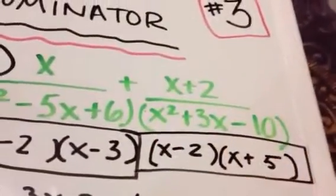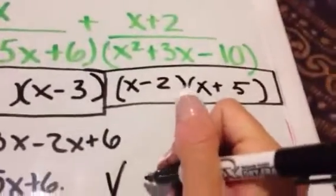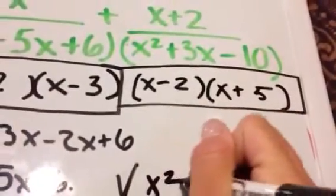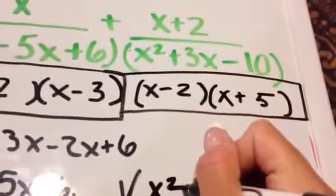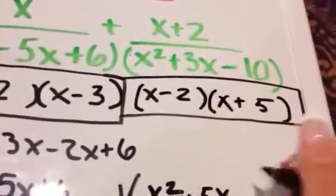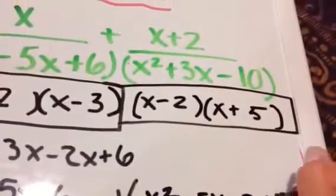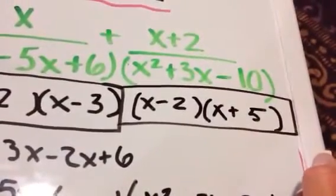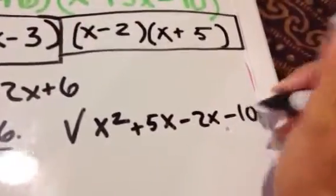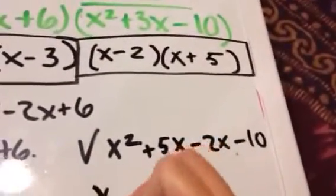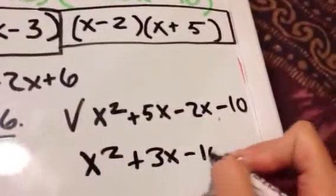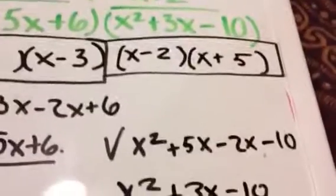Let's do a quick check. You foil it to verify you get the same answer you started with — First, outside terms, inside term, and last terms. Combine like terms, and we did get the same expression we started with.